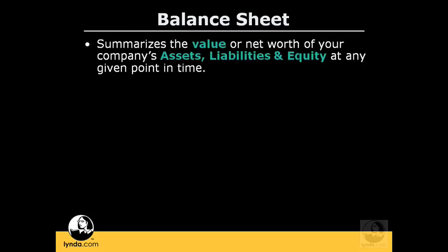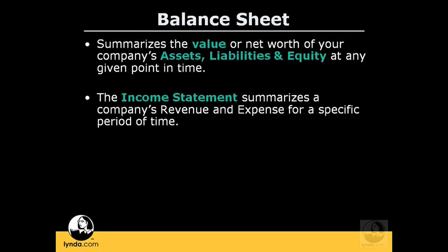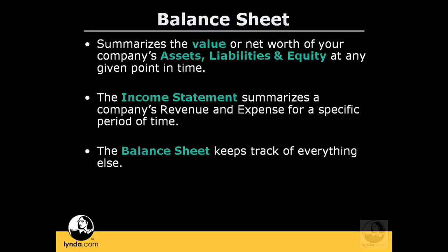If you remember from the previous movie, the income statement tracks revenue and expense accounts to let us know if we made or lost money. The balance sheet tracks everything else — everything that we own, everything that we owe, and the net value between the two.